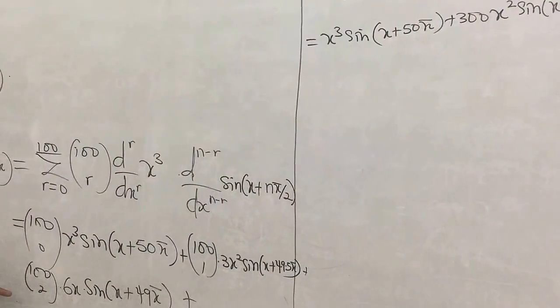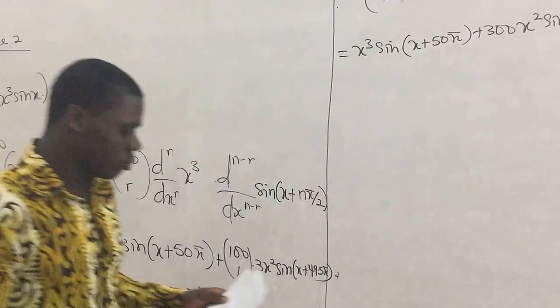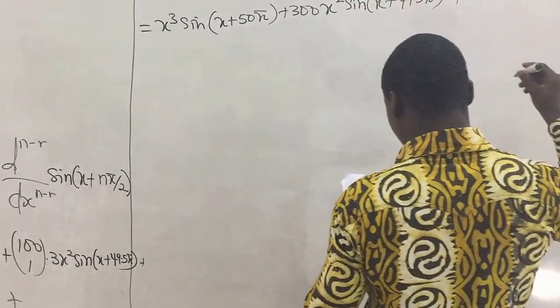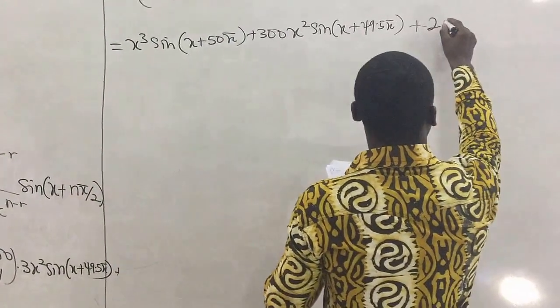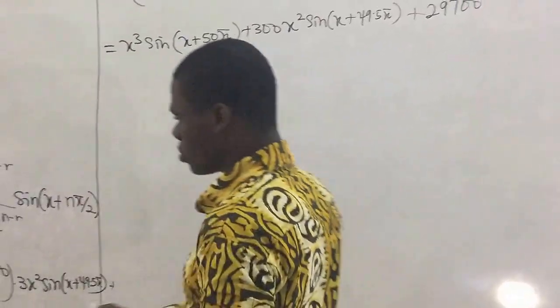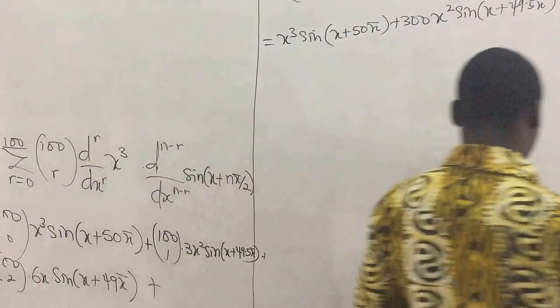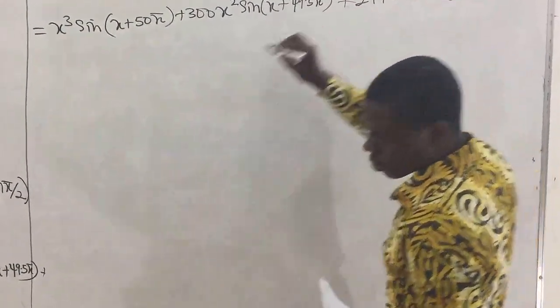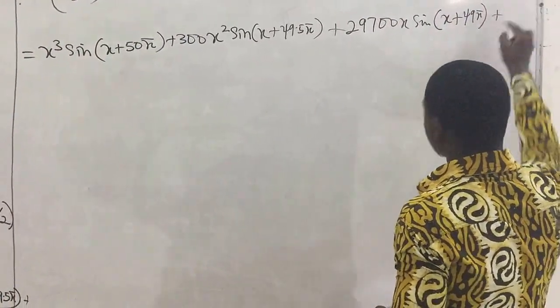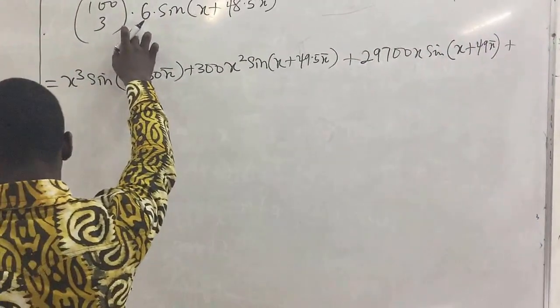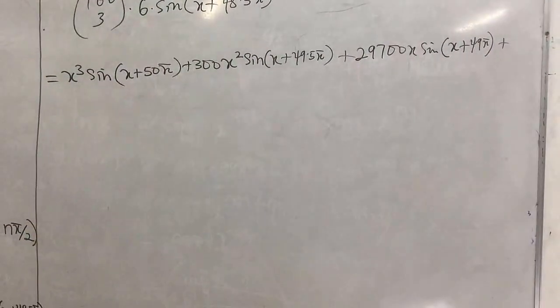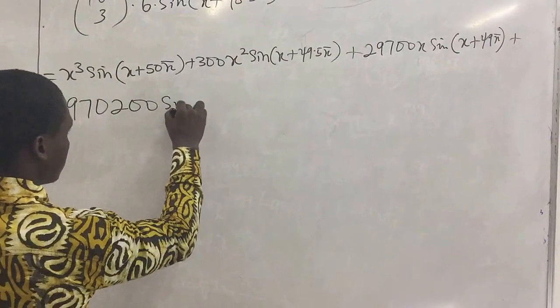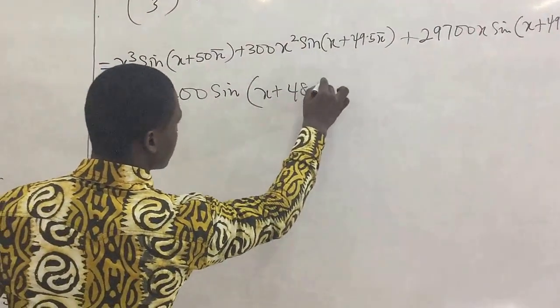So we get to this side, so 100 combination 2 multiplied by 6. So when we punch that on the calculator, we're going to get 29700, and at this moment we have x here. So 29700 x, then sine x plus 49 pi, plus. So 100 combination 3 multiplied by 6 will give us 970200, so we have sine x plus 48.5 pi.